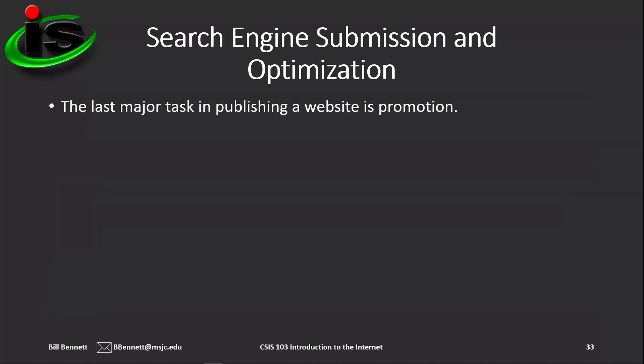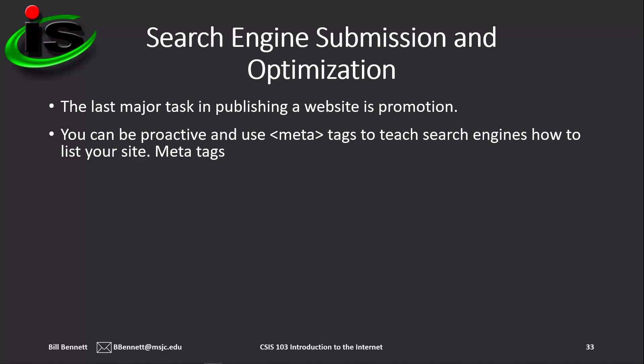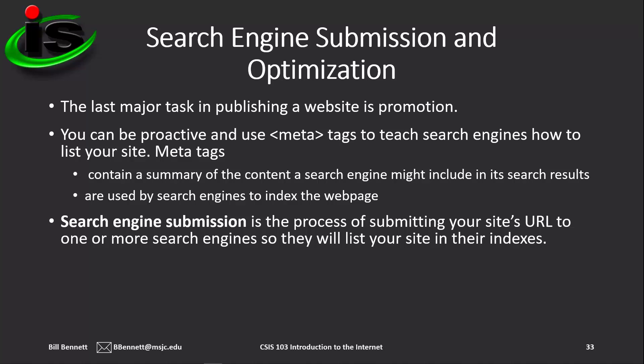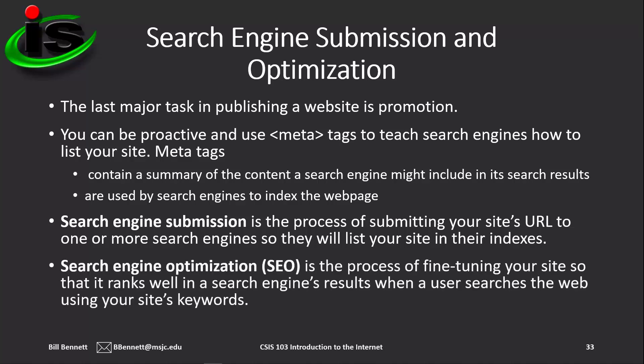The last major task in publishing a website is promotion. You can be proactive and use meta tags in your web pages to teach search engines how to list your site. Meta tags contain a summary of the content that a search engine might include in its search results and are used to index the web page. Search engine submission is the process of submitting your site's URL to one or more search engines so they will list your site in their indexes. Search engine optimization is the process of fine-tuning your site so it ranks well in search results when users search for your site's keywords.